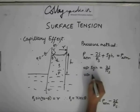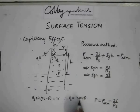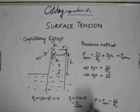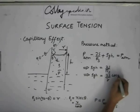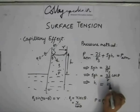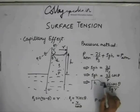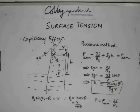Substituting Rs equals r*sec(theta) into rho*g*h equals 2s/Rs, we get rho*g*h equals 2s*cos(theta)/r. Therefore h equals 2s*cos(theta) divided by rho*g*r. This is the height to which the liquid rises in the capillary tube. Let us consider the next method.